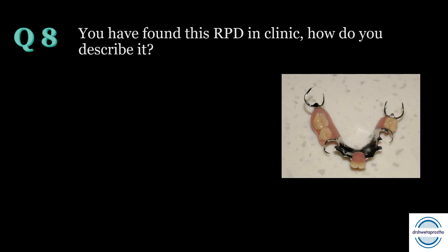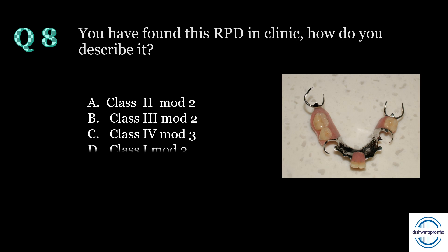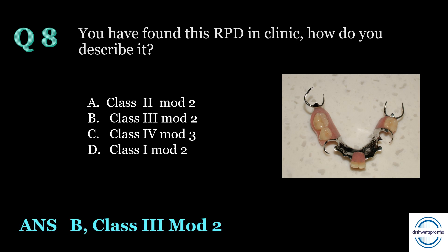Question number eight: you have found this RPD in the clinic. How do you describe it? A. Class 2 mod 2, B. Class 3 mod 2, C. Class 4 mod 3, D. Class 1 mod 2. The answer is B, Class 3 mod 2. The main edentulous area is tooth-bounded because clasp assemblies are present anterior and posterior to it, and there are two modification spaces, so it is Class 3 mod 2.